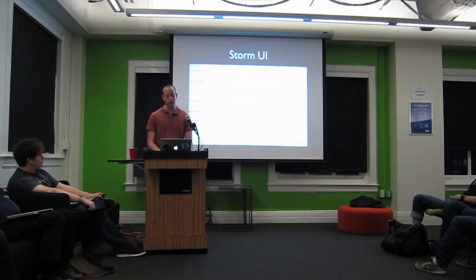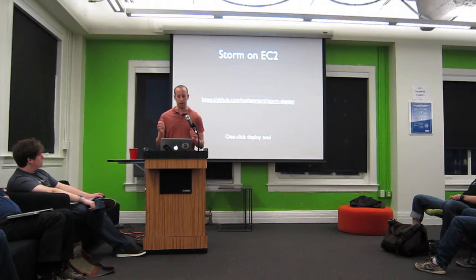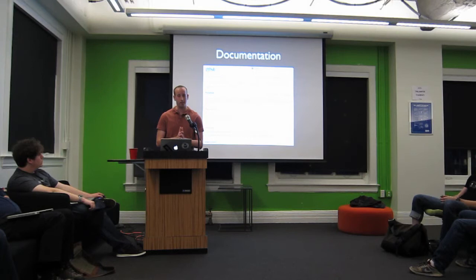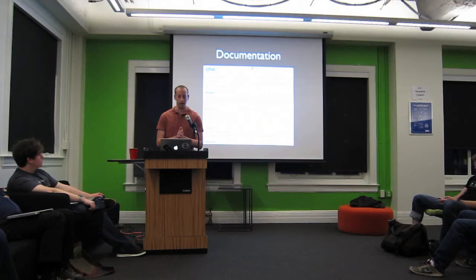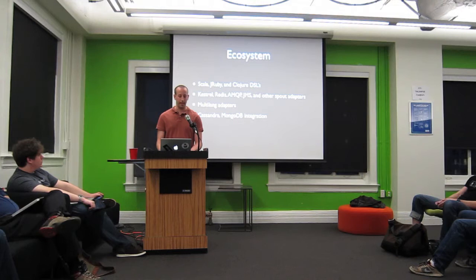A few more tips about Storm: Storm has a UI similar to the Hadoop UI — this lets you see what's running on the cluster and gives you detailed statistics like latencies for each processing step and throughput through every task. If you're on EC2, there's a companion project called Storm Deploy, which is a one-click deploy tool to provision, configure, install, and launch an entire Storm cluster. All the code shown in this presentation is in the Storm starter project, which has example code to get up and running quickly. Storm also has extensive documentation on its wiki — over 20,000 words. Finally, Storm has a growing ecosystem with open-sourced spout implementations, adapters for other languages, and bolts to integrate with things like Cassandra and MongoDB.